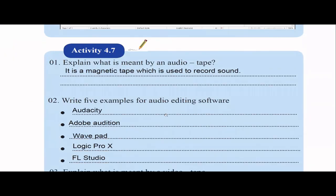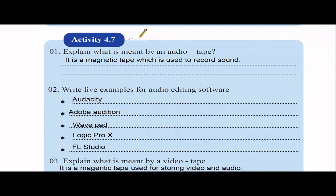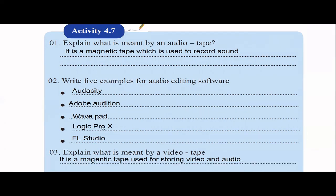Activity 4.7: an audio tape is a magnetic tape used to record sound — if you have only sound, we call it audio. For audio editing software, the textbook mentions Audacity and Adobe Audition — please remember those names and their logos. Additional audio editing software includes WavePad, Logic Pro X, and FL Studio. You can also search Google to find more examples.